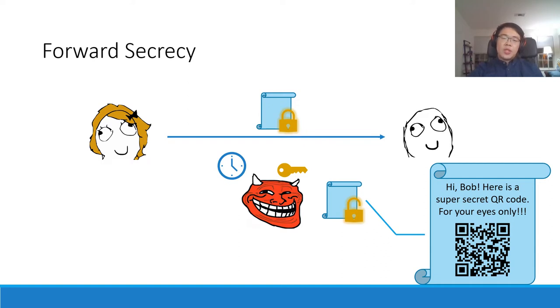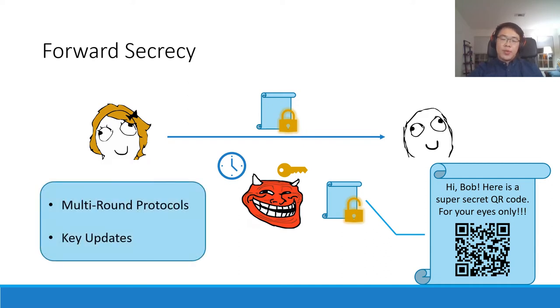To prevent against this, we need something we call forward secrecy — essentially saying that a private key leaked in the future should not compromise the security of messages sent before. However, to achieve forward secrecy we would either need the protocol to contain multiple rounds, or require Alice and Bob to constantly update their keys, both of which could be undesirable in many scenarios.